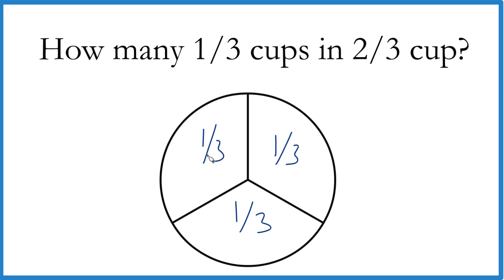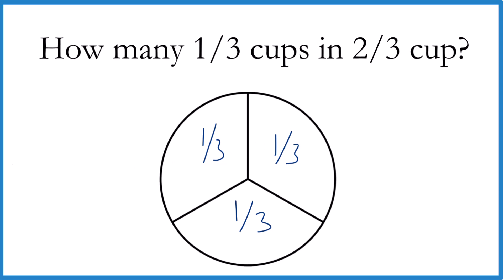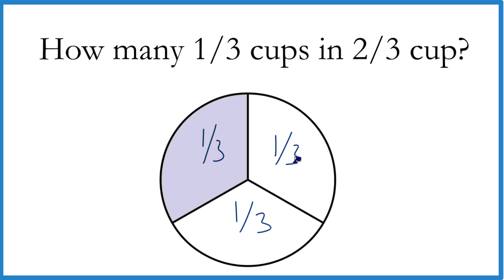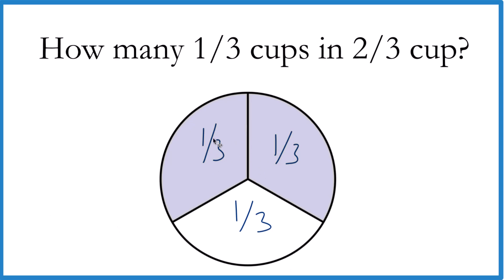With two-thirds, we're talking about two of these. Let's take and color in two of them. That's two-thirds. What we want to know is how many one-third cups are there in two-thirds, and you can see there are two. So we have two of these one-third cups in two-thirds. There's another way to do this, maybe a little more mathematically.